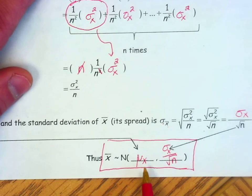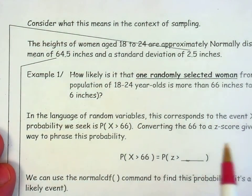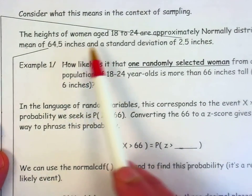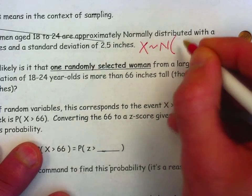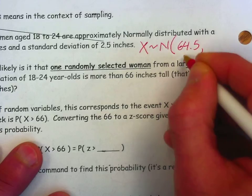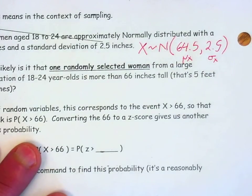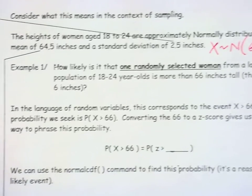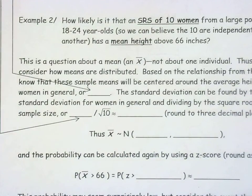I want you to try two questions on the back side in the context of sampling. Both involve a model we've looked at before — the heights of women aged 18 to 24, approximately normally distributed with a true mean of 64.5 and true standard deviation of 2.5. So mu x is 64.5 and sigma x is 2.5. I'll put the solutions on Moodle so you can see how well you're doing. The back page compares how we used z-scores before versus how we use z-scores now in the context of sample means.